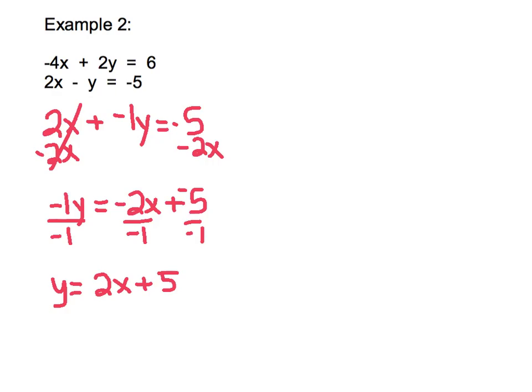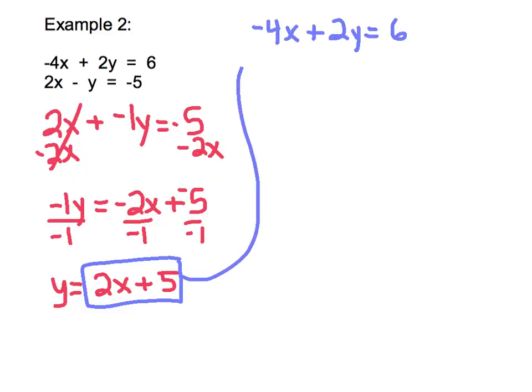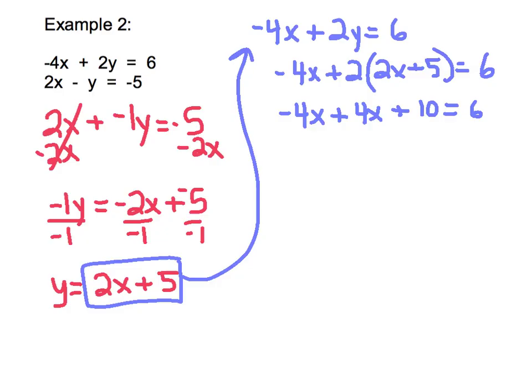Step 2, substitute the value of that variable into the other equation. So, I'm going to substitute 2x plus 5 in place of y in our other equation. So we will substitute it up here. Negative 4x plus 2 times 2x plus 5 is equal to 6. Using my knowledge of solving equations, I know I need to use the distributive property first. So, negative 4x plus 4x plus 10 equals 6. When I combine my like terms, I get 0 plus 10 equals 6. 10 equals 6.